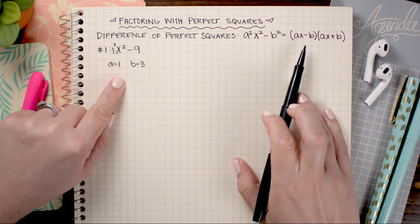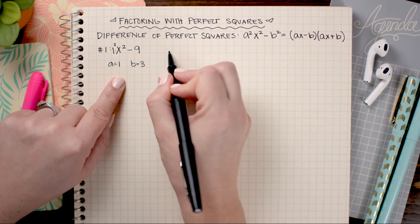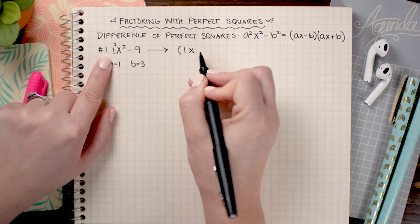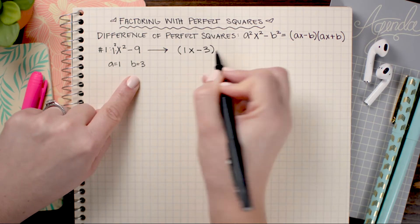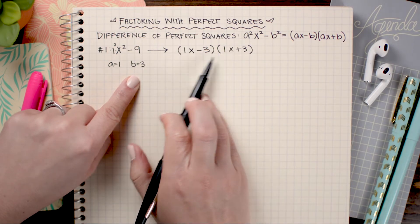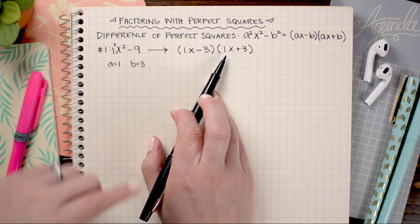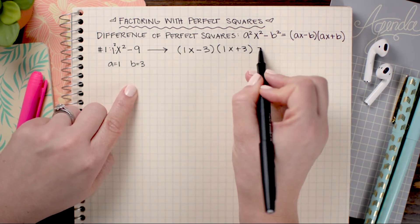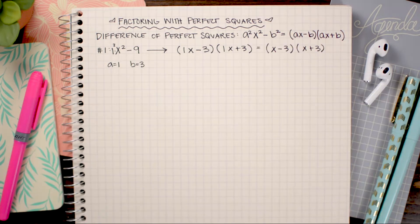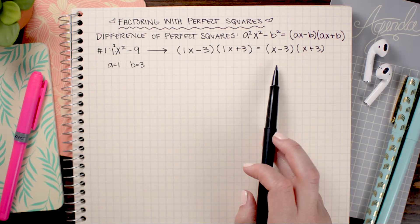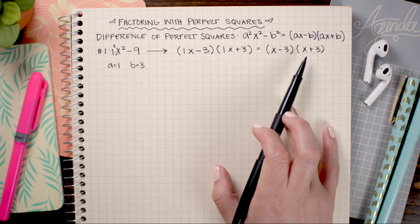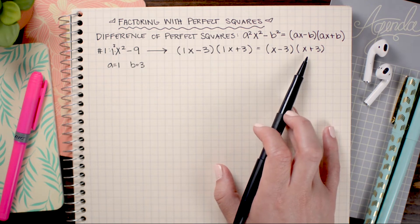Now I'll rewrite it using the formula. This becomes (1x minus 3)(1x plus 3). Of course I don't have to write the ones, so this is the same as (x minus 3)(x plus 3). The reason this factorization works is because having the exact same values with opposite signs in the middle makes the middle term drop out.